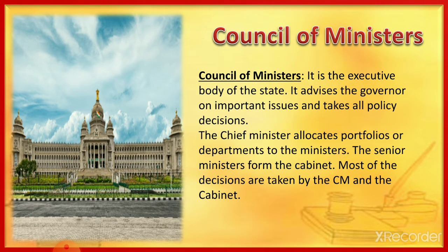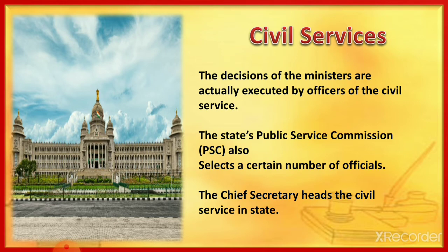The Council of Ministers is the executive body of the state. It advises the Governor on important issues and takes all policy decisions. The Chief Minister allocates portfolios or departments to the ministers. Most decisions are taken by the Chief Minister and the Cabinet. The administration at the state level is run by the Civil Service. The State's Public Service Commission (PSC) also selects a certain number of officials. The Chief Secretary heads the Civil Service in the State, and Secretaries in charge of various departments work under him or her.